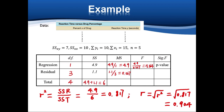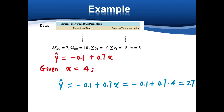Multiple R is the square root of R-squared, which equals 0.904, meaning the relationship between x and y is very strong. Using this model, we can predict the value of y using any value of x. So if x equals 4, we put x equals 4 into the equation and the predicted value of y equals 2.7.